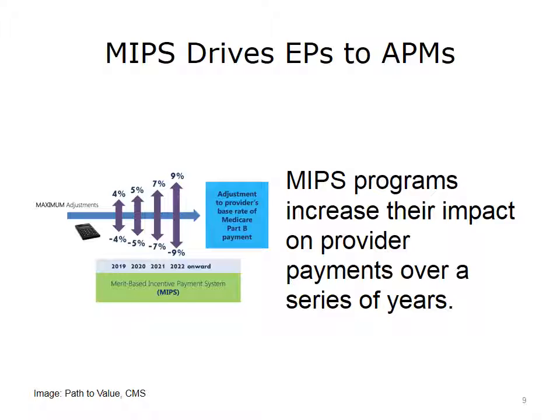This composite performance score determines the amount of adjustment to a provider's base rate of Medicare Part B payment. For 2019, CMS set the maximum amount of adjustment from MIPS to 4%. The percentage of the adjustment amount increases over time, reaching a maximum of 9% by 2022 in the proposed rule. At 9%, the penalties incurred can start to have significant impact. Thus, by 2022, CMS is expecting to see these MIPS payment incentive programs largely affect the way health care is both paid for and provided.